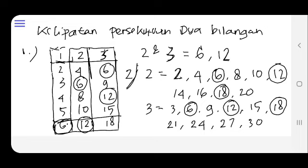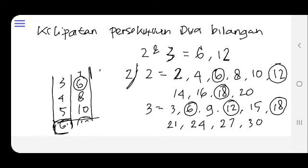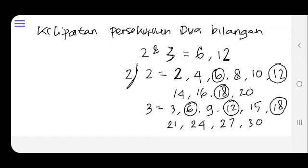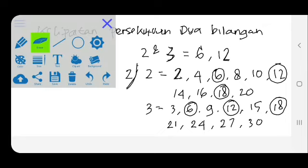Jadi kelipatan persekutuan 2 dan 3 yaitu hasilnya 6, 12, dan 18. Paham ya teman-teman? Nah perlu diketahui sebagai catatan ya, materi kelipatan persekutuan ini nanti akan menyambung dengan materi KPK ataupun FPB. Insya Allah nanti dengan metode ini sebagai awalan dasar untuk kemahaman kelipatan persekutuan baik itu KPK maupun FPB.